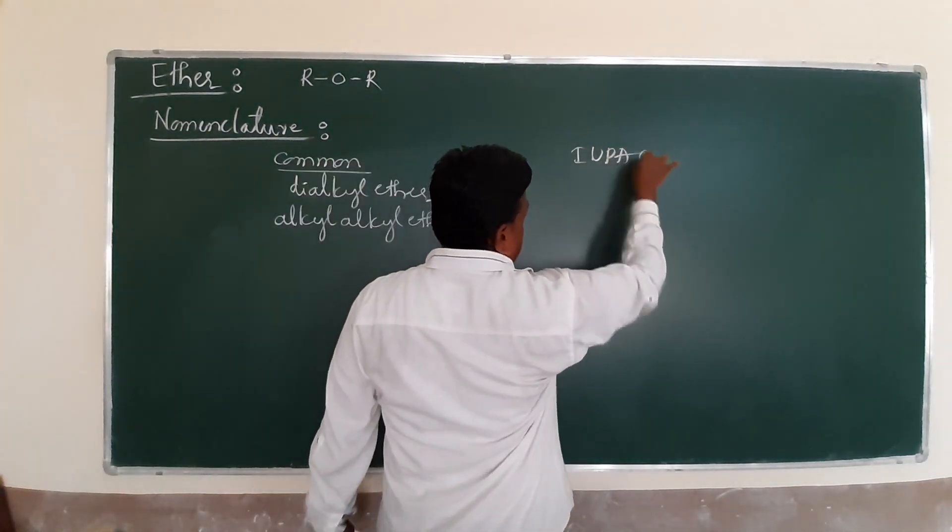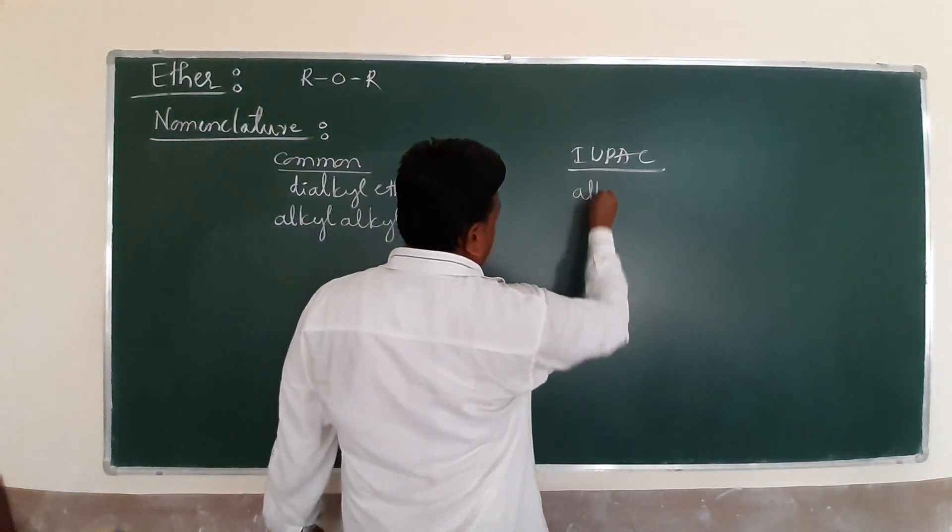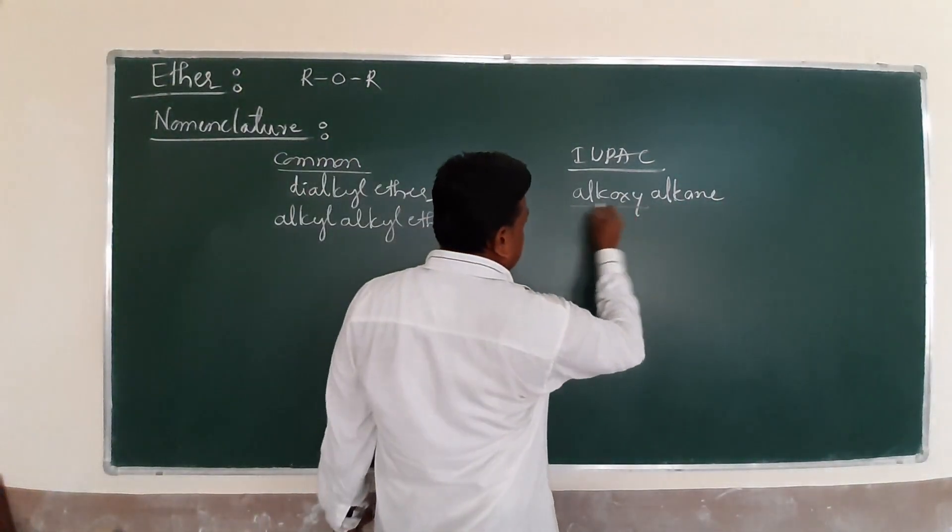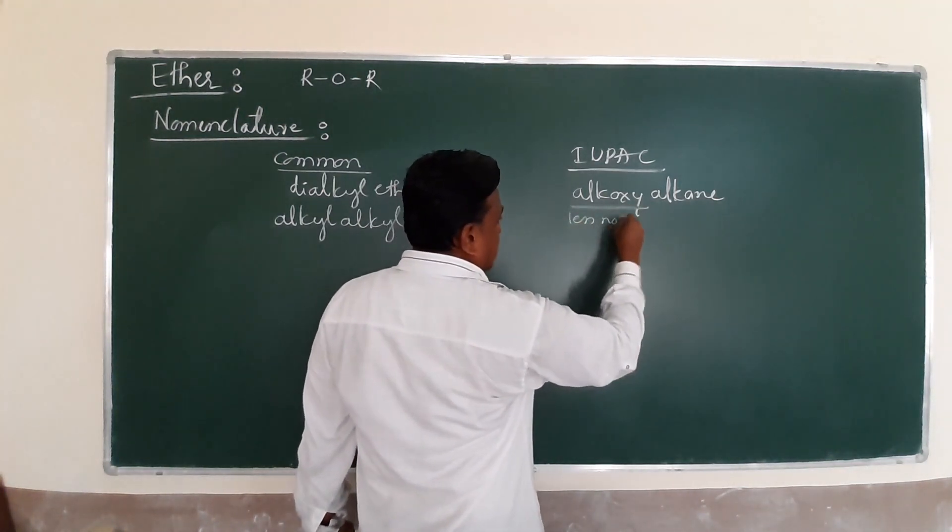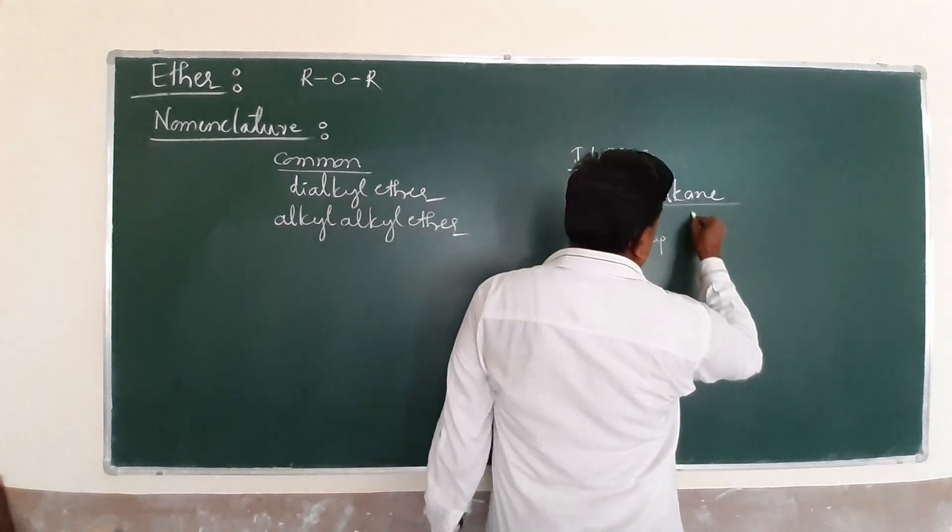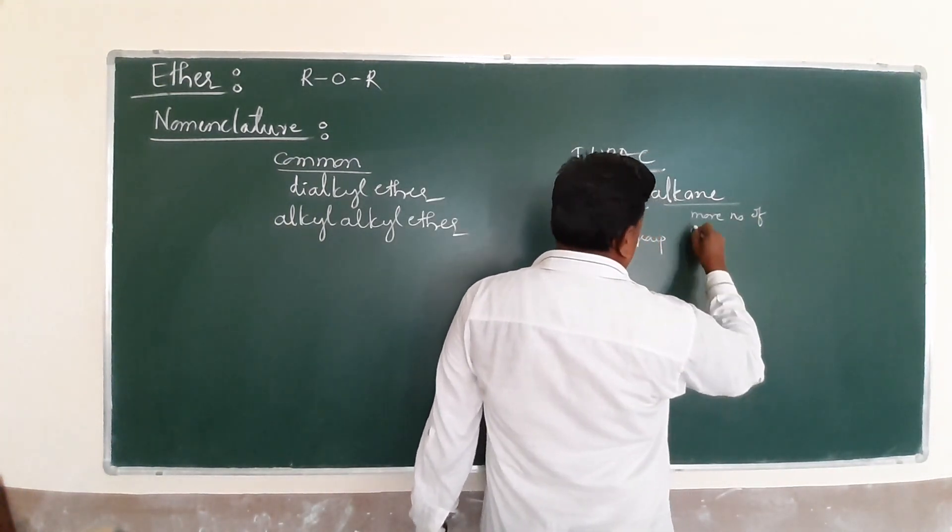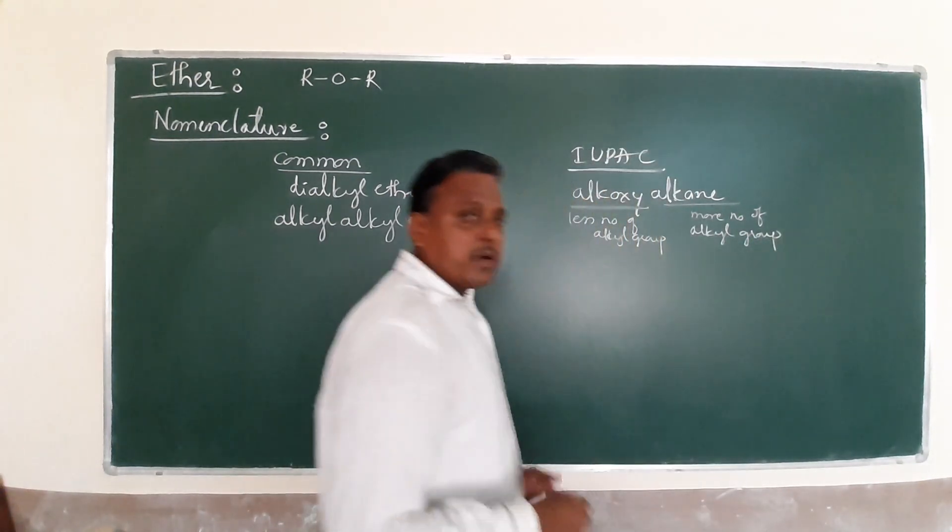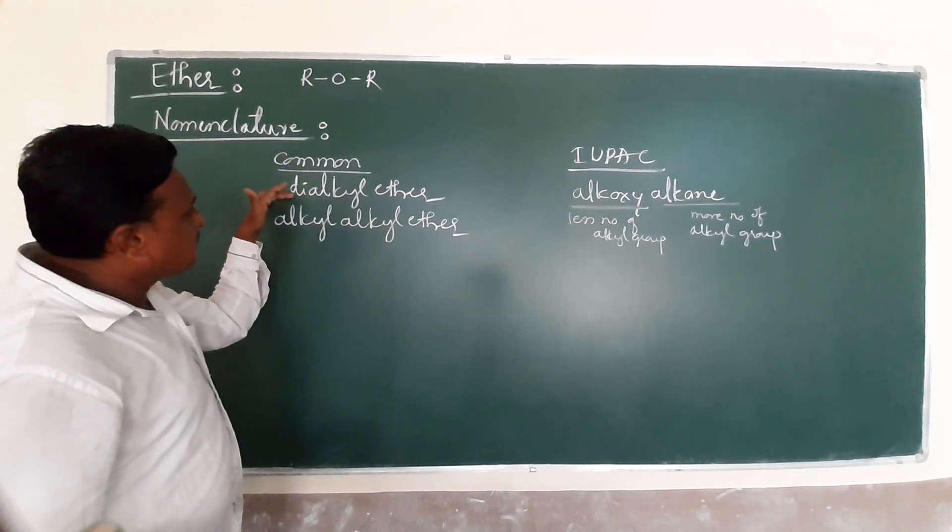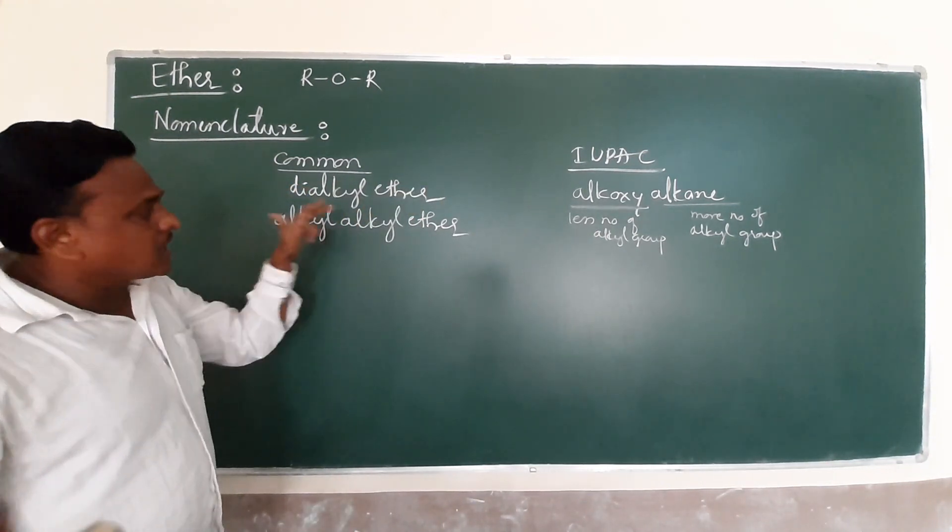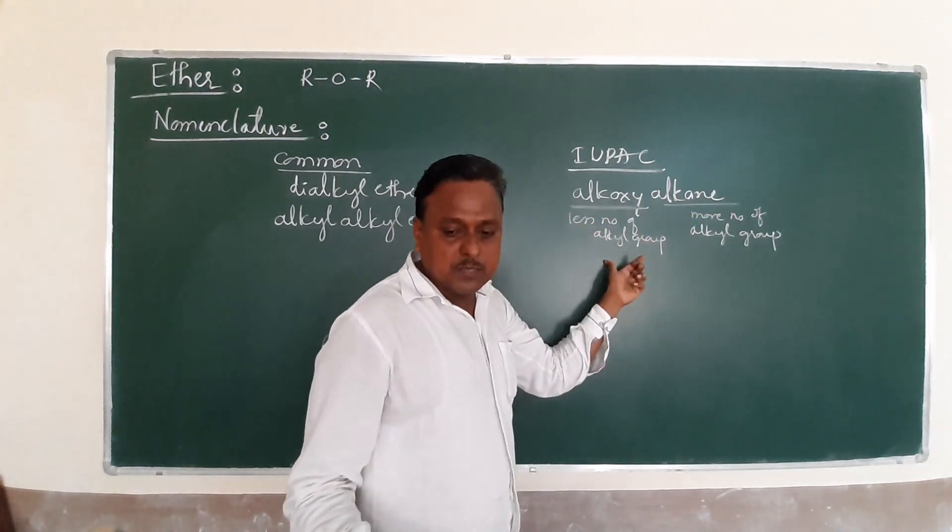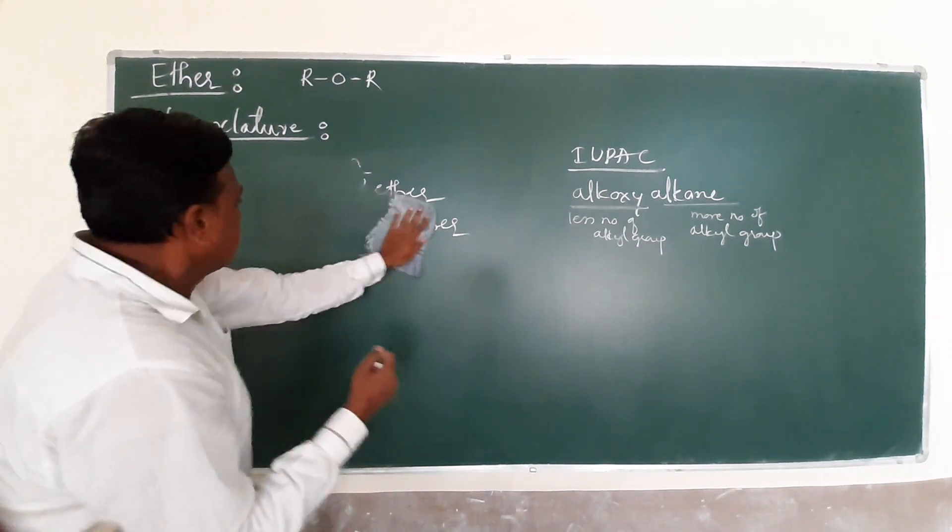In IUPAC, the ethers are named as alkoxy alkane. This is very important - the alkoxy term must contain the less number of carbons, while the alkane has more carbons. Keep in mind nomenclature of ethers has two patterns: common and IUPAC.